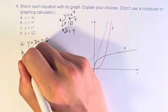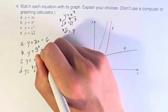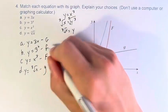Therefore the only one left is b, y equals 3 to the x. It's an exponential function represented by lowercase f.